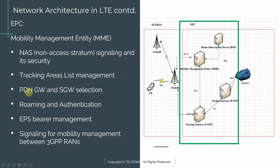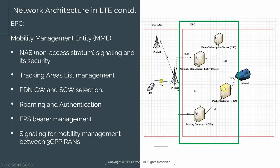The MME is also responsible for selection of the PDN gateway, the S-GW (Serving Gateway), and the Packet Data Gateway. As you can see, there are two network elements here — the Serving Gateway and the Packet Gateway. The MME uses certain criteria and logic to select which serving gateway and packet gateway to use from a pool, depending on the size of your network.